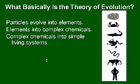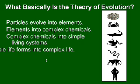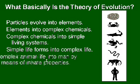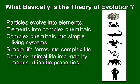So you have elements like nitrogen and hydrogen evolved into amino acids, evolved into carbohydrates and proteins and so forth, and then into living cells. Finally, the living cells evolved into more complex life, and then complex animal life eventually formed man by means of innate properties.